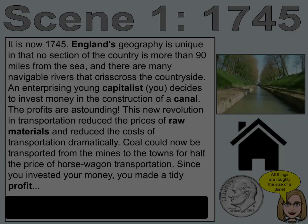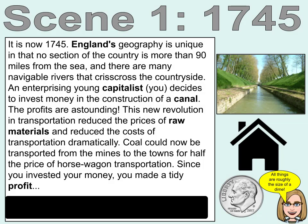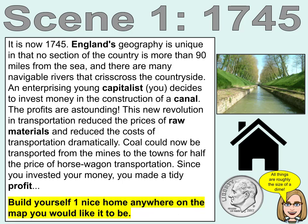Scene 1. It is now 1745. England's geography is unique in that no section of the country is more than 90 miles from the sea, and there are many navigable rivers that crisscross the countryside. An enterprising young capitalist — that's you — decides to invest money in the construction of a canal. The profits are astounding. This new revolution in transportation reduced the prices of raw materials and the cost of transportation dramatically. Coal can now be transported from the mines to the towns for half the price of horse-wagon transportation. Since you invested your money, you made a tidy profit. Build one nice home anywhere on the map you would like.